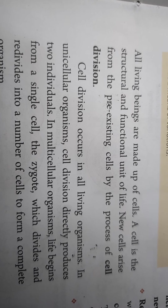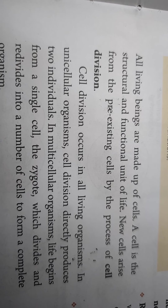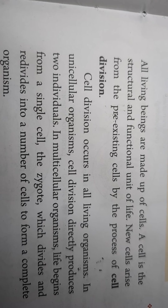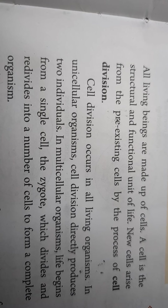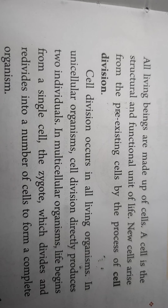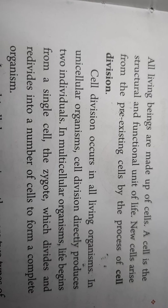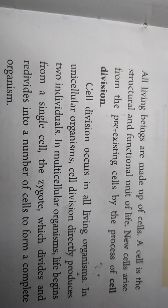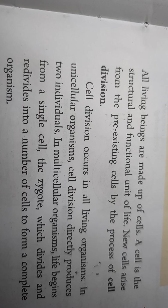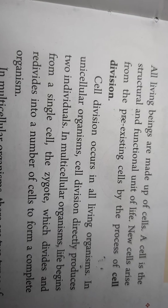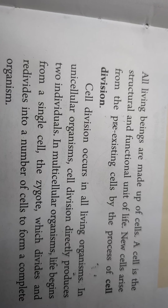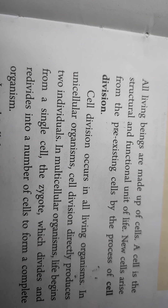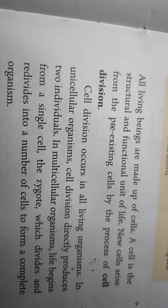In unicellular organisms, cell division is simple — the parent cell divides directly to give two daughter cells. But in multicellular organisms, life begins with a single cell called the zygote. The zygote divides and re-divides to form an organism. So in multicellular organisms, different cells arise from pre-existing cells through cell division.